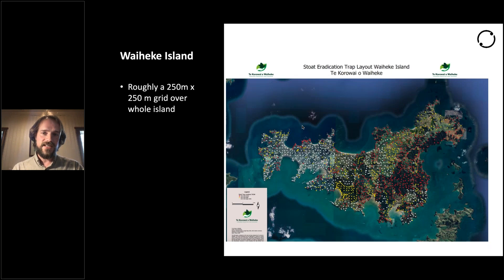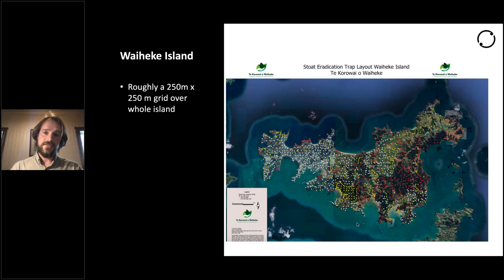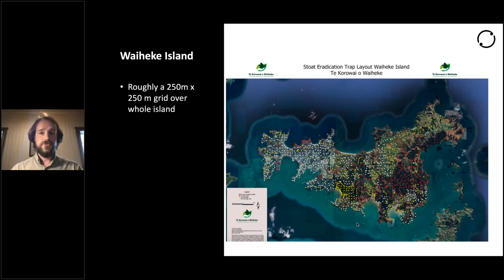Waiheke Island — as of Monday — will restart trapping. This trap network is even more dense and far more regularly spaced, basically equivalent to a 250-metre by 250-metre grid over the whole island. All the modelling says if you can eradicate using traps, this will do it. My genetic work has shown that the island is very isolated — it's a 5km swim if you have to do it direct, which is a long way for a stoat. So this could be the largest successful stoat eradication operation.